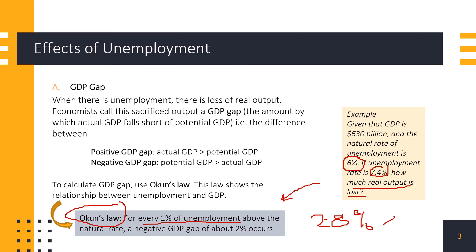The question asks how much real output is lost. So you take the 2.8% negative GDP gap and multiply it with the given GDP figure of $630 billion. The answer is $17.64 billion of real output is lost.